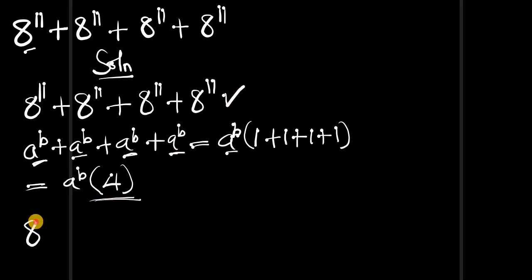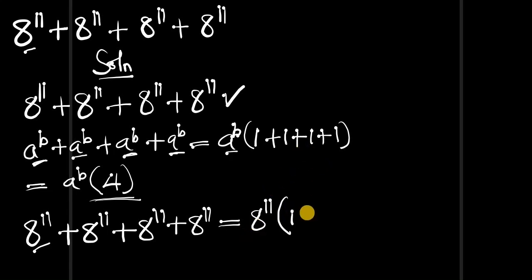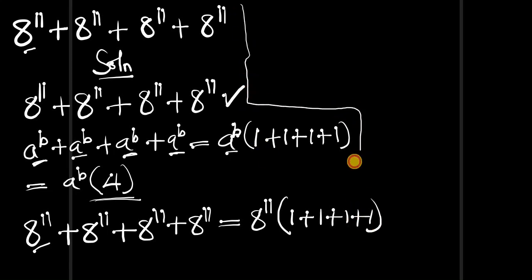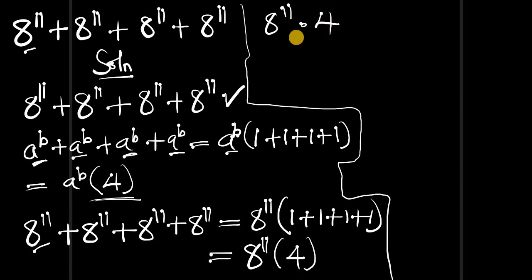That means 8 to the power of 11, plus 8 to the power of 11, plus 8 to the power of 11, plus 8 to the power of 11 is simply equal to 8 to the power of 11, times (1 + 1 + 1 + 1), which gives us 8 to the power of 11 times 4.